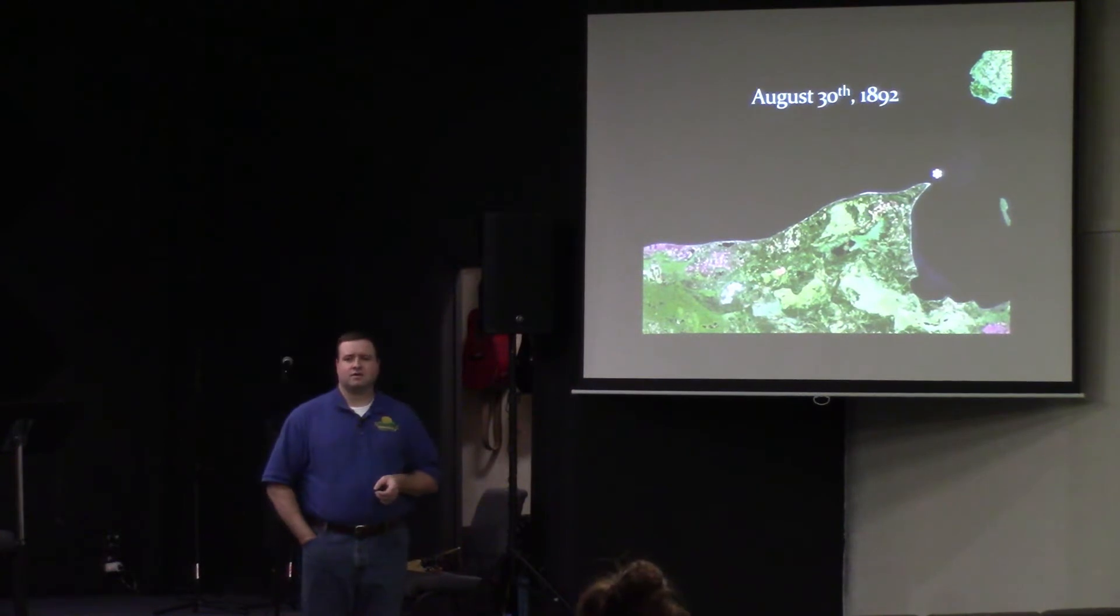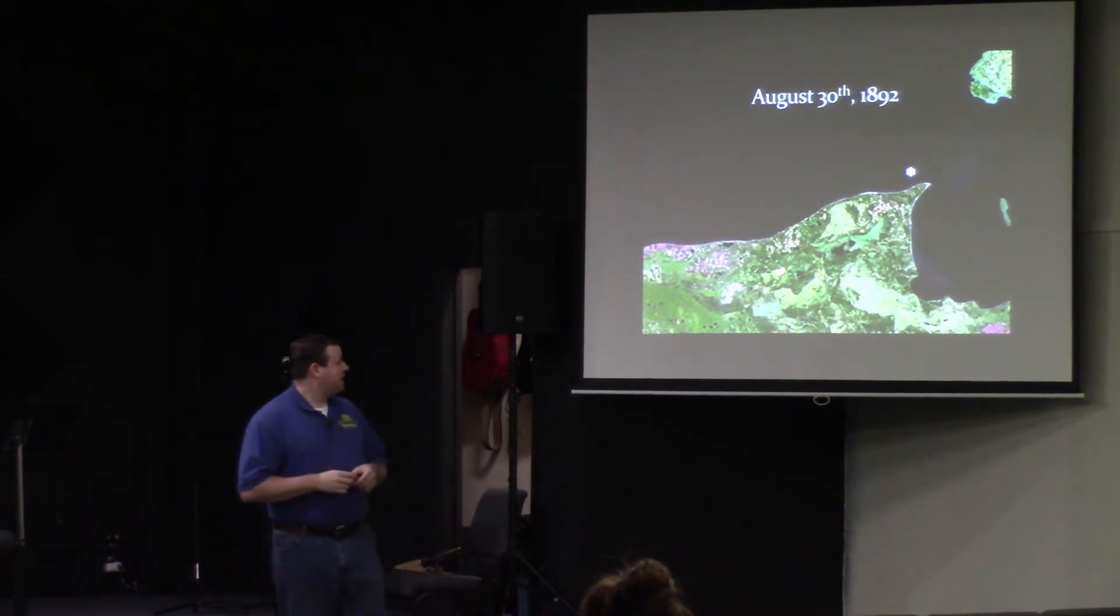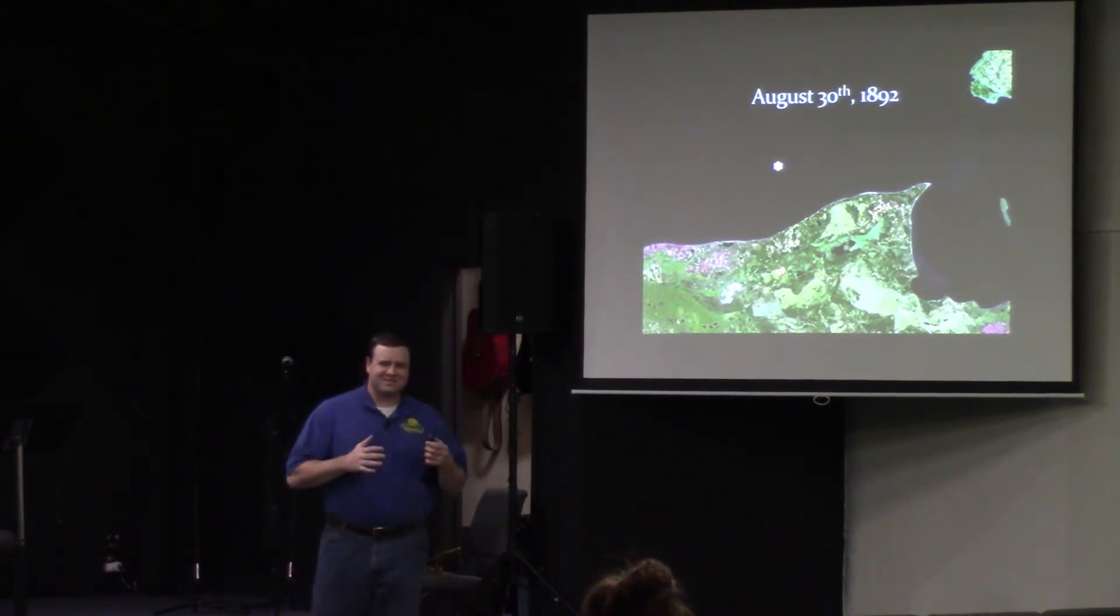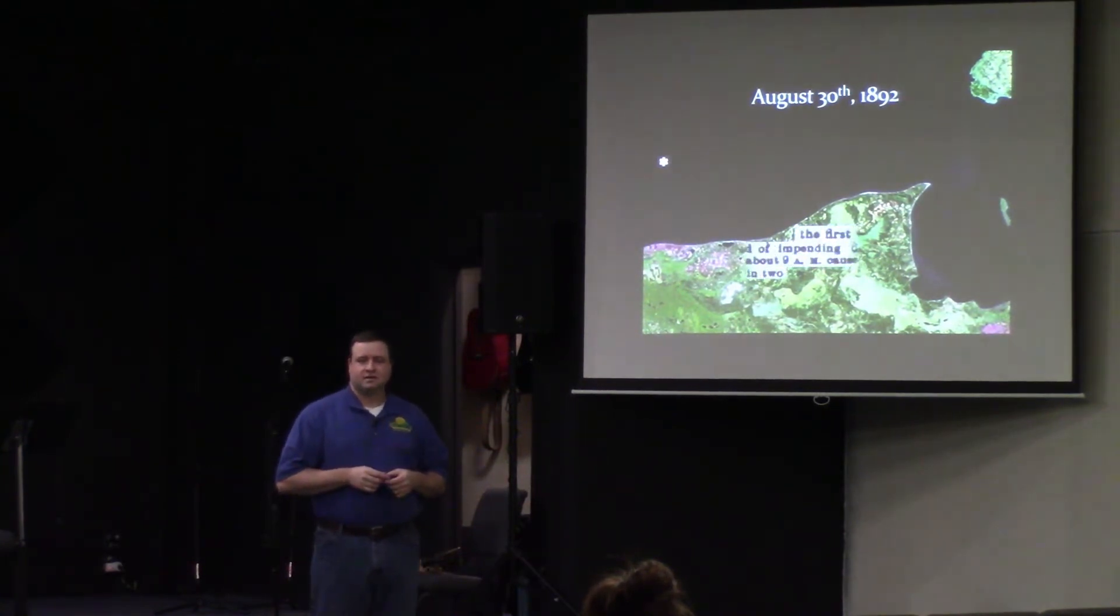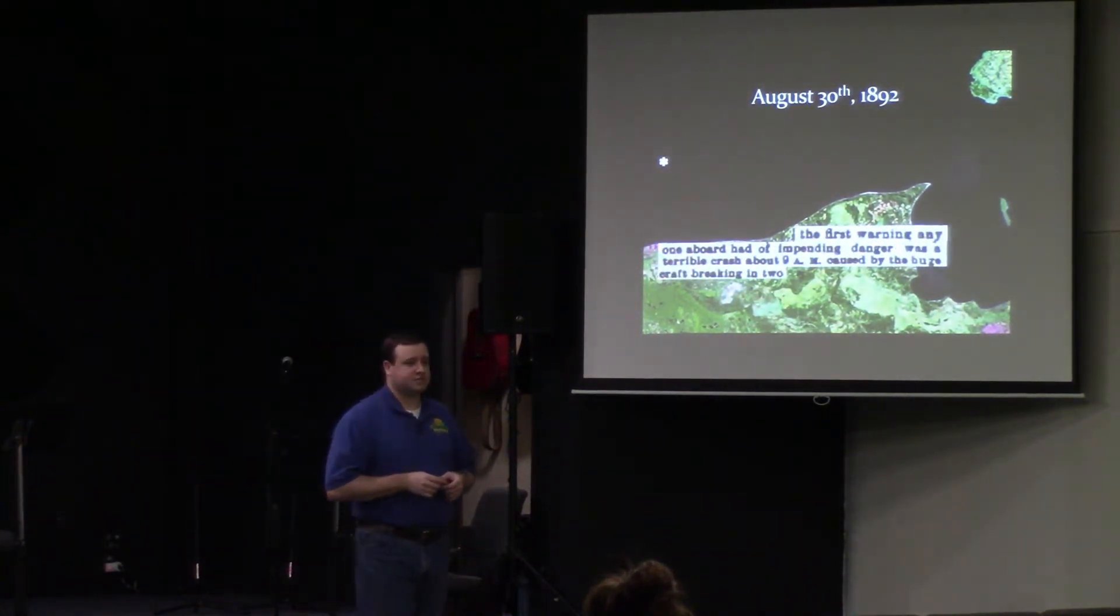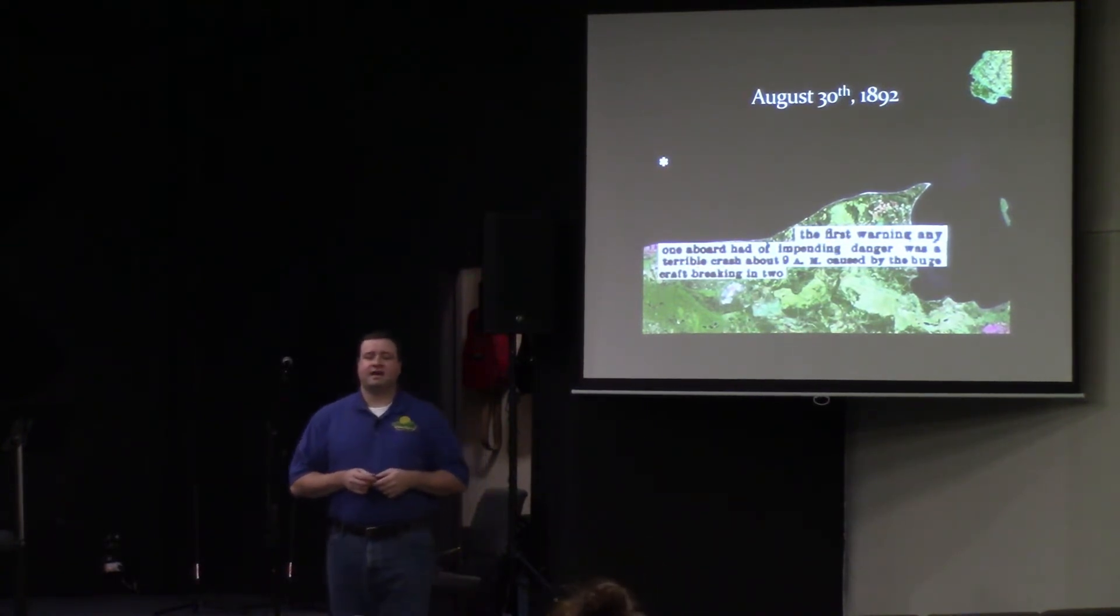She's going to go nose first into the waves up to Whitefish Point. Then she's going to haul around to the northwest heading for Two Harbors, Minnesota. When they're about 60 miles northwest of Whitefish Point, there's going to be a large crash. It's going to wake people up. There is a wheelsman named Harry Stewart who's asleep in his bunk. This crash actually wakes him up. He goes running out on deck. And what he finds is the Western Reserve breaking in half.